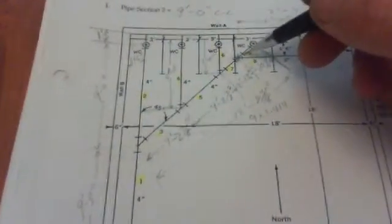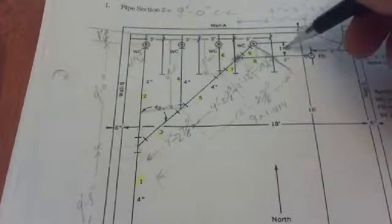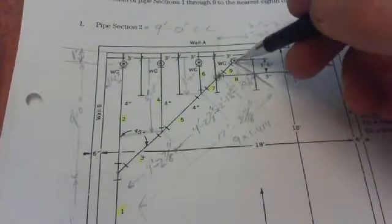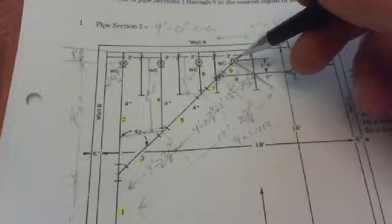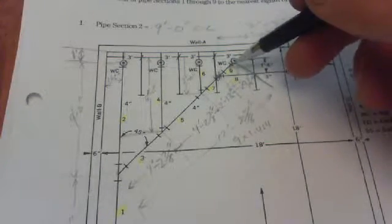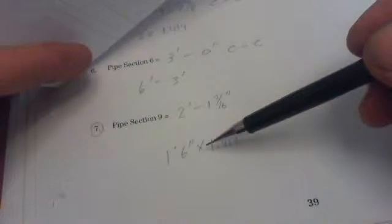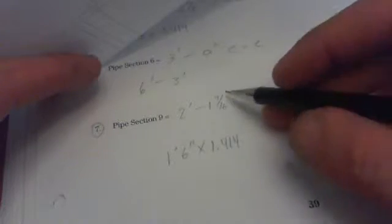Pipe section 9. We have 1 foot 6 here, 18 inches, whatever. And that's going to be our offset or advance. Multiply it by 1.414 to get our travel. That's what I did and that's what I got: 2 foot 1 and 7/16 inches.